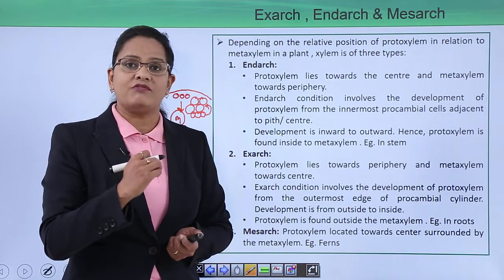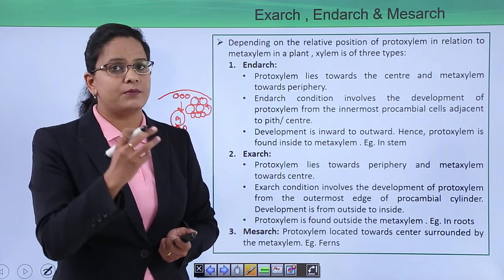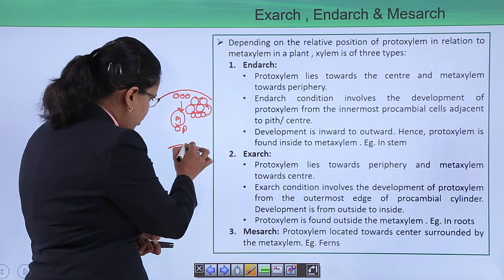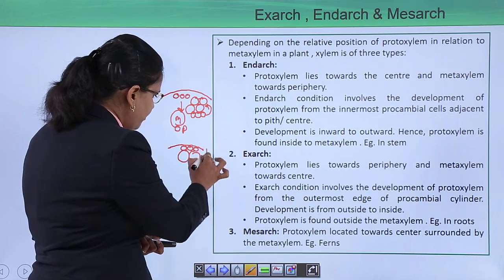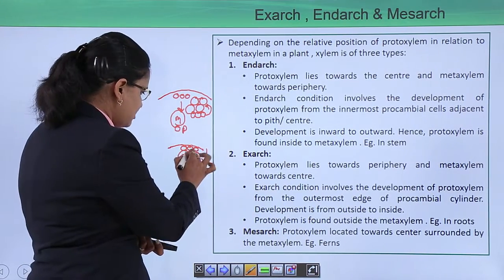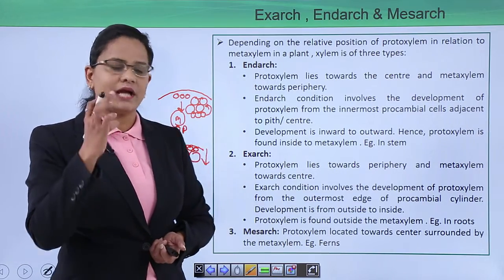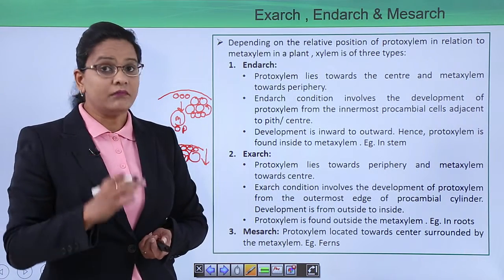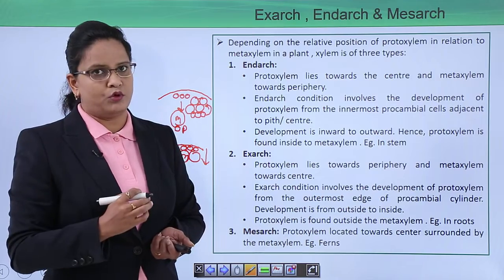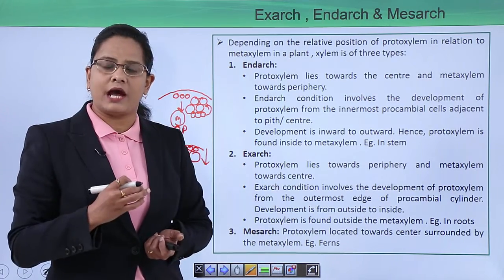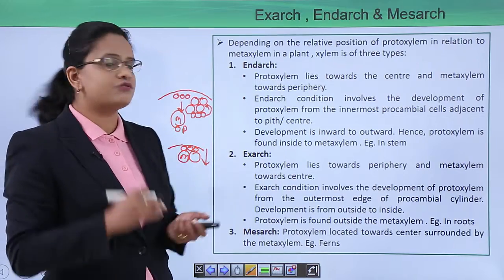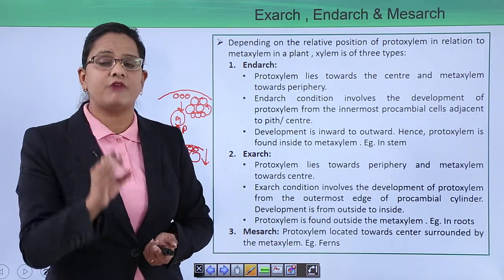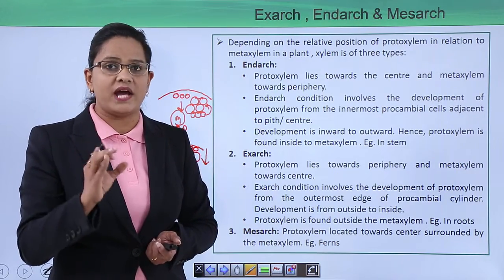In the exarch condition, proto xylem lies towards the periphery. The outer cells are developing proto xylem, so proto xylem is towards the outside and meta xylem is towards the center. Growth is from outside to inside, involving development from the outermost pro cambium cells. The exarch condition is specially found in roots.